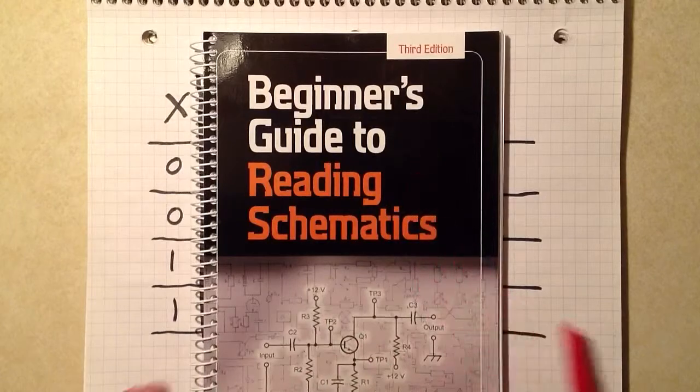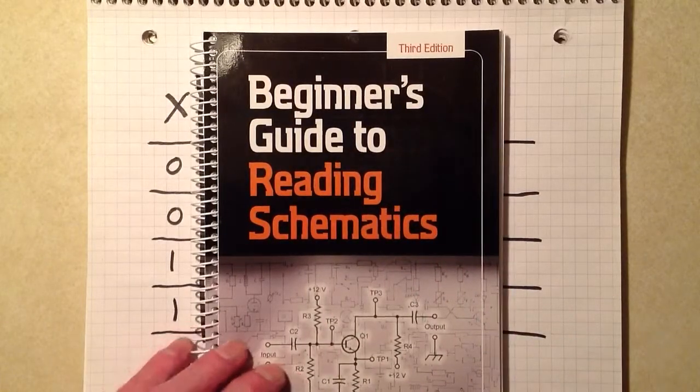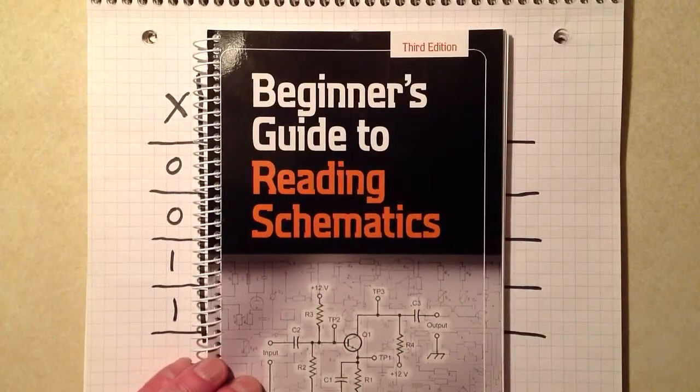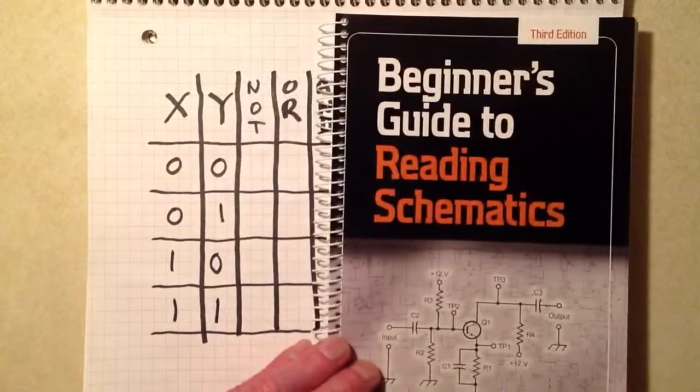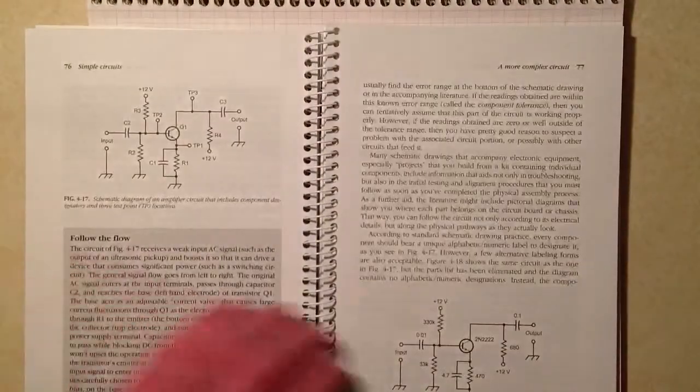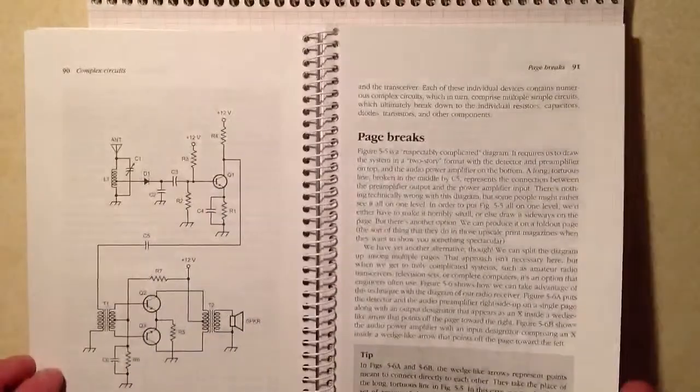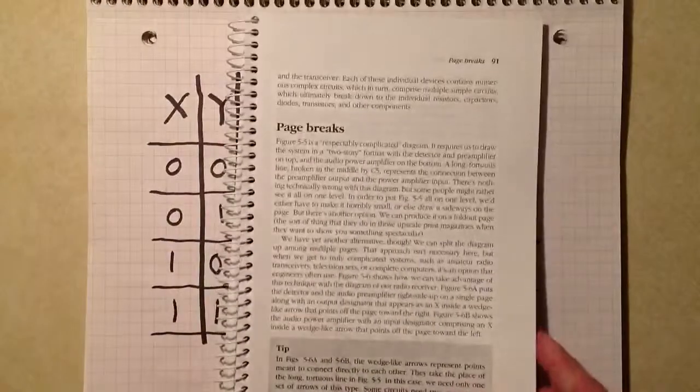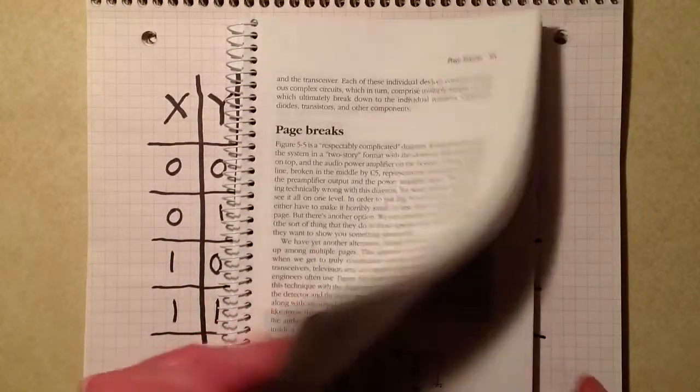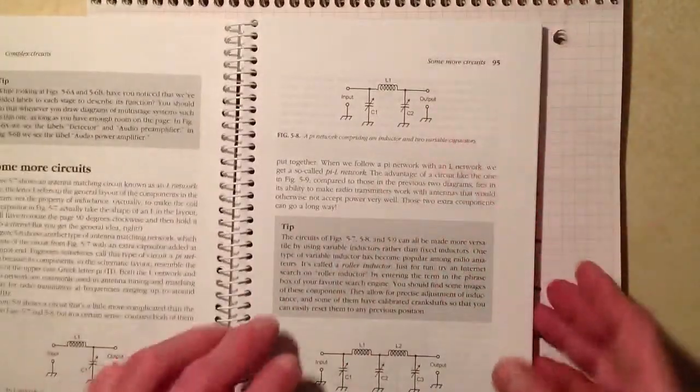I recommend that you get the paper-bound version for a variety of reasons. Number one, it has a spiral binding, and it'll lie flat on your workbench for you. You can fold it back like this. The paper is good heavy stock. It's built to last.